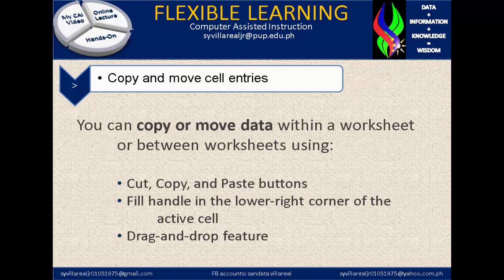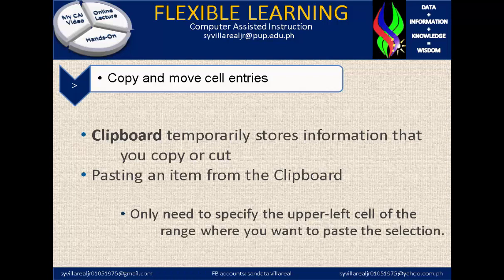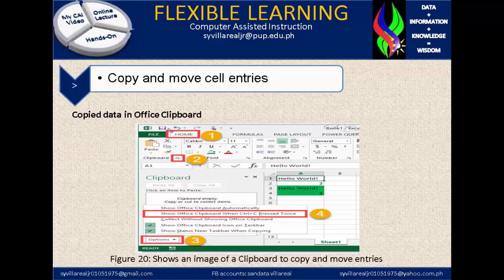You will notice that we can use copy or move data in three ways. The clipboard temporarily stores information that you copy or cut. Pasting an item from the clipboard only requires you to specify the upper left cell of the range where you want to paste the selection. Figure 20 shows an image of a clipboard to copy and move entries — this shows copied data in the Office clipboard. Make sure the clipboard panel has been shown so that it's easy to determine what to paste upon copying to the clipboard.